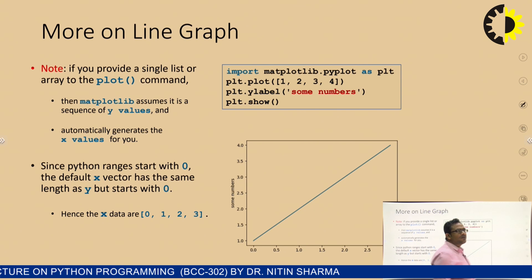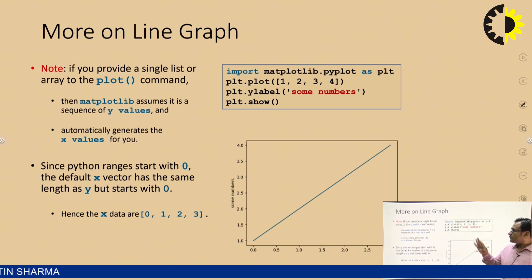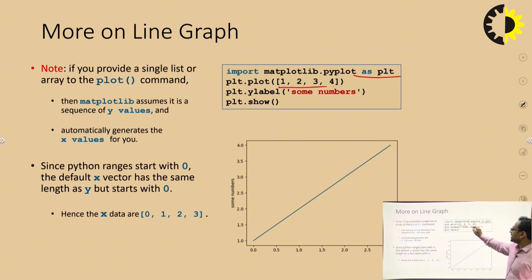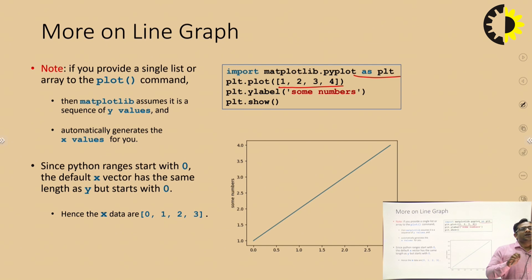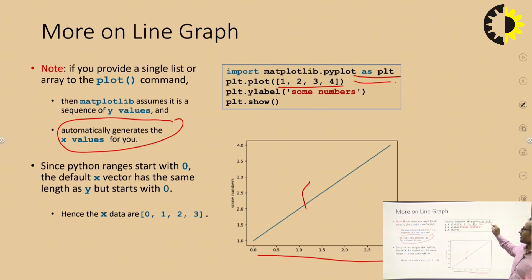More on the line graph: if you are providing a single list array to a plot command, the plot command assumes it is a sequence of y values, and automatically generates the x values for you. So y values are given here, and x is automatically taken and the graph is generated.